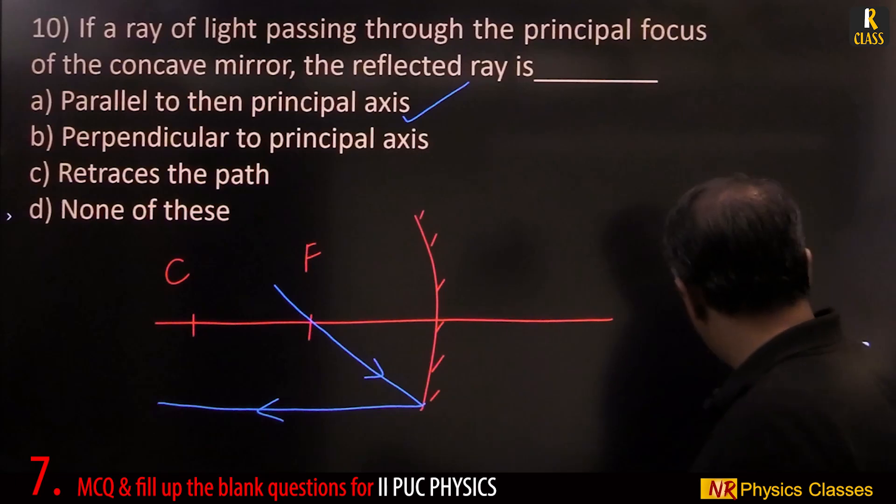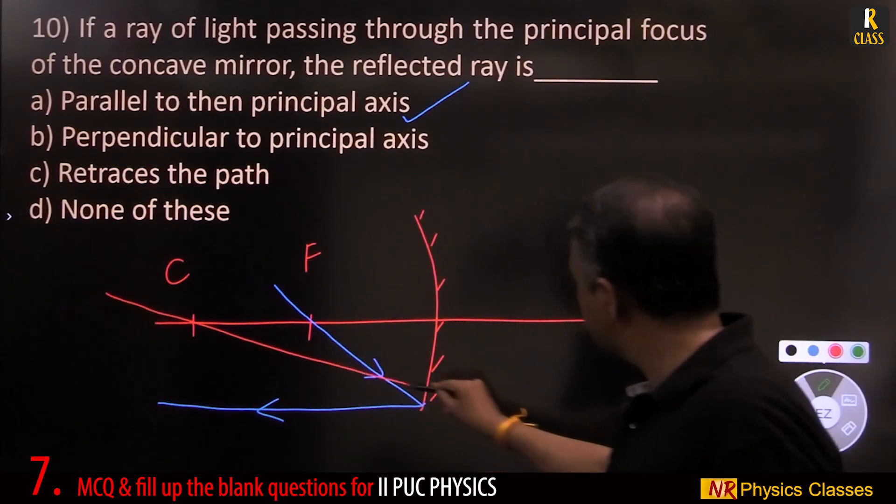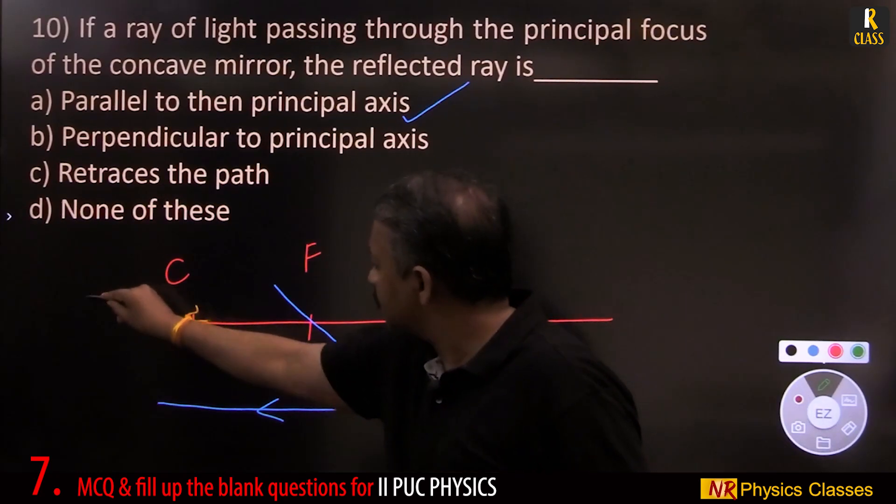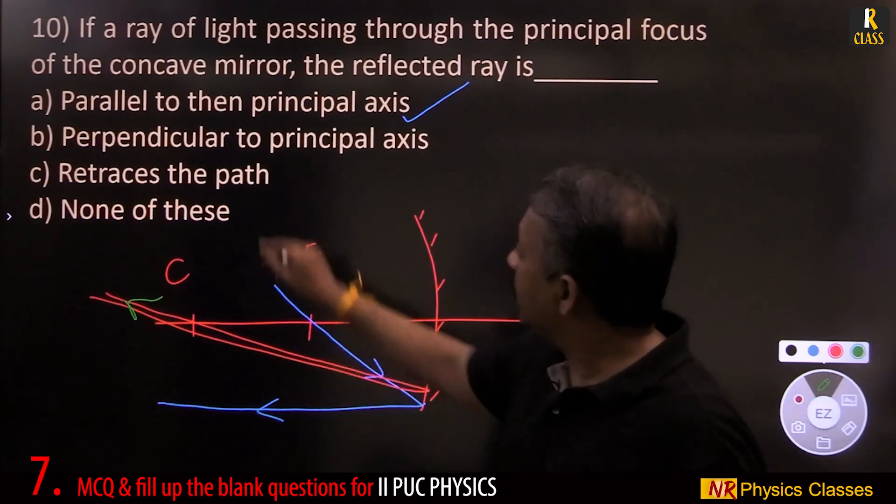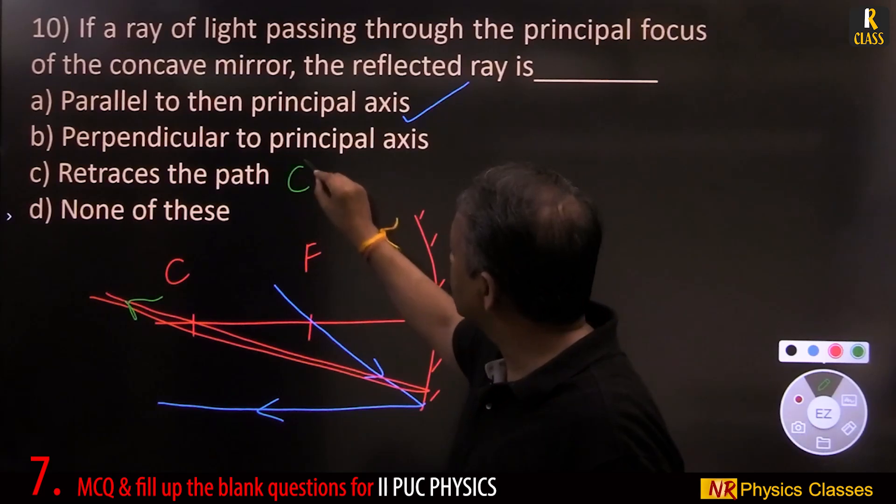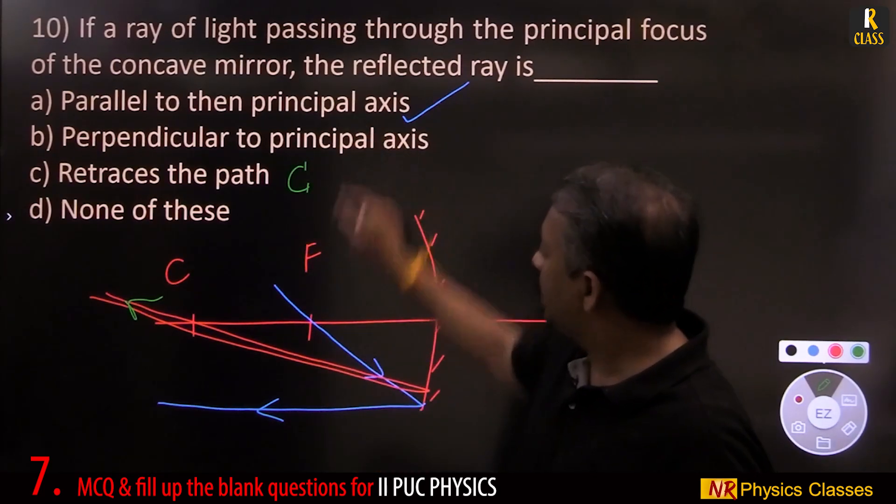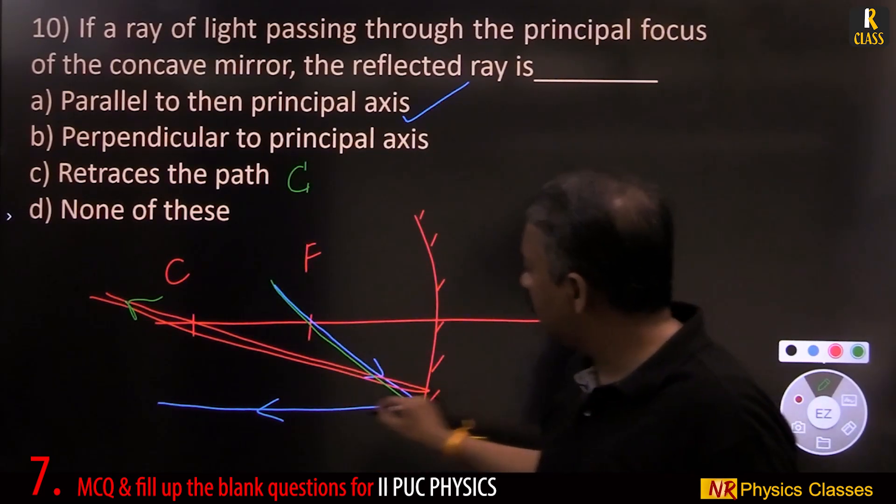If there is a ray passing through the center of curvature, something like this, then it retraces the path. Retraces is when it passes through center of curvature, but principal focus it becomes parallel.